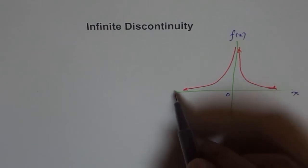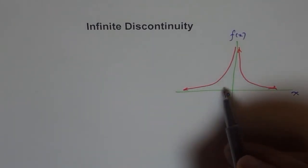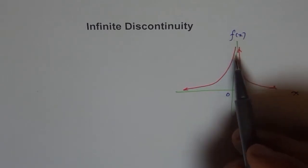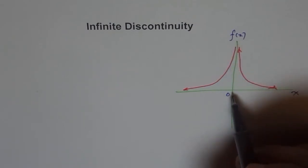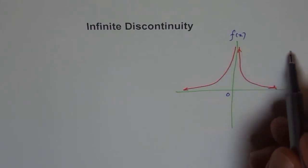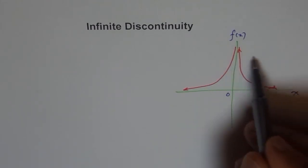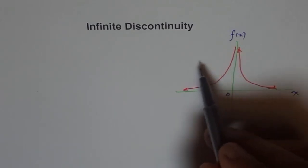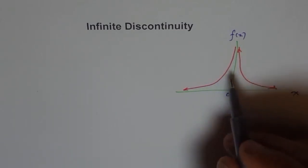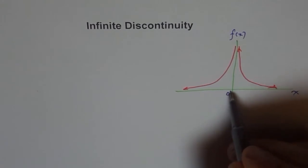As you approach 0 from the negative side, we see that the limit of this function approaches infinity — it becomes increasingly positive. And this seems to be a vertical asymptote here at x equals 0. Even when you approach from the positive side, the function is going to infinity. This one was from the negative side, meaning 0 minus.